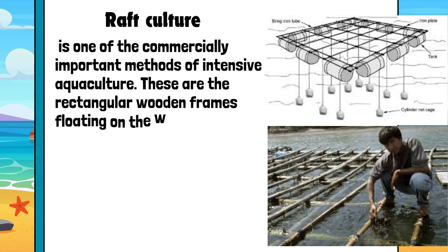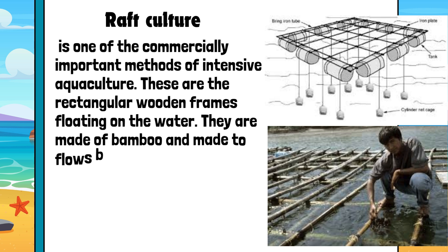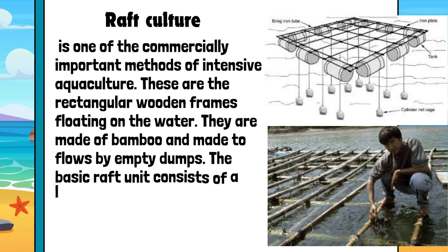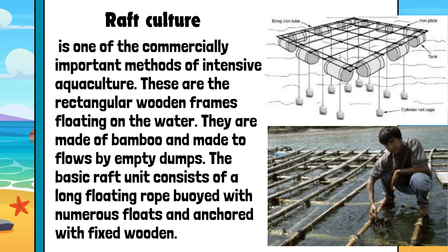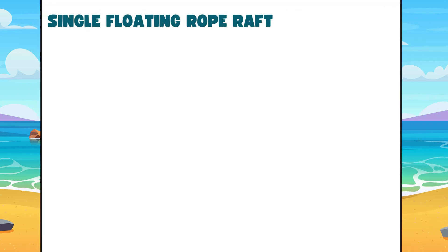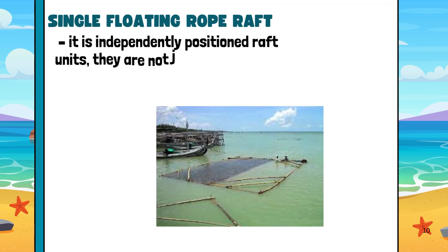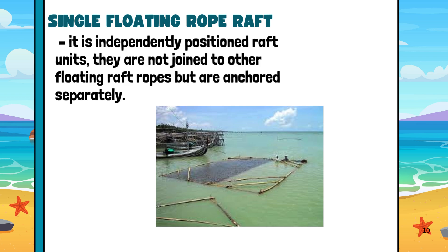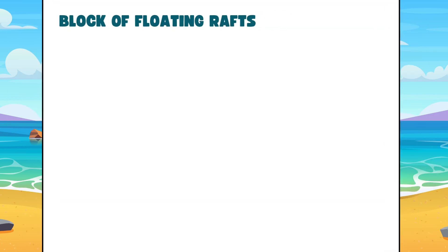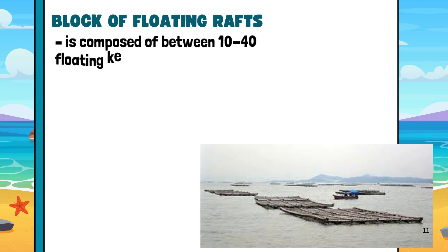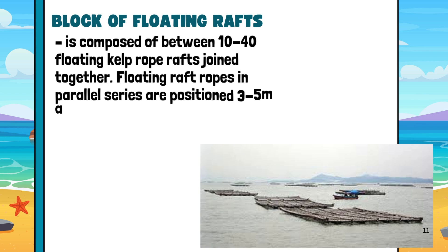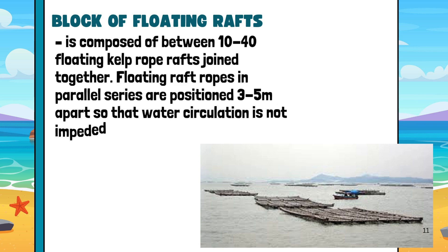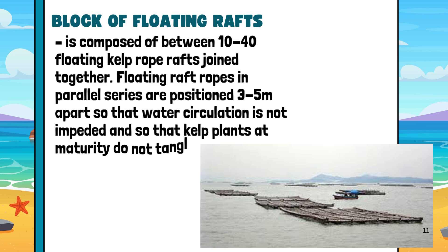Raft culture: These are rectangular wooden frames floating on the water. They are made of bamboo and made to float by empty drums. The basic raft unit consists of a long floating rope with numerous floats and anchored with fixed wooden poles. Single floating rope raft units are independently positioned and not joined to other floating raft ropes, but are anchored separately. A lock of floating rafts is composed of between 10 to 40 floating kelp rope rafts joined together. Floating raft ropes in parallel series are positioned 3–5 meters apart so that water circulation is not impeded and so that kelp plants at maturity do not tangle.